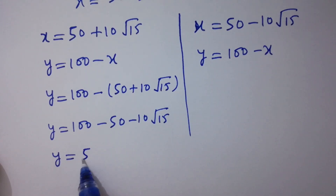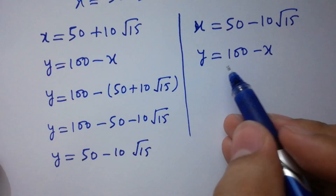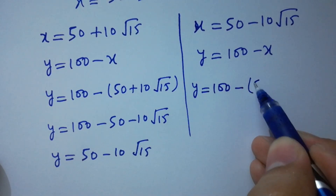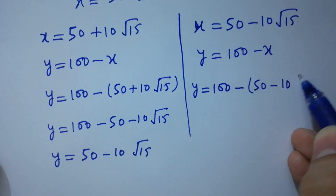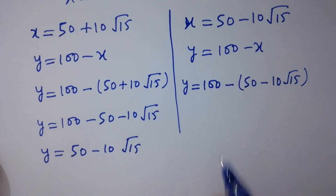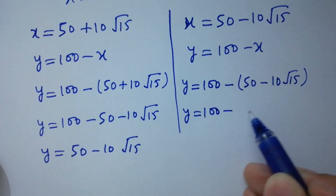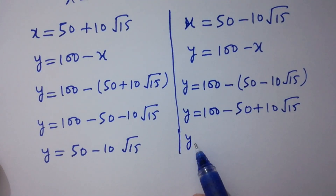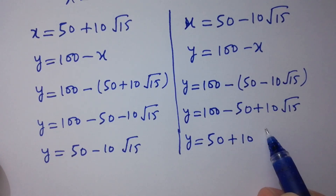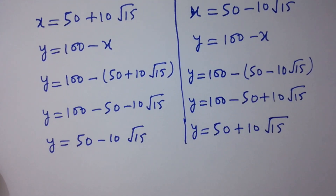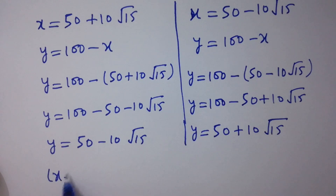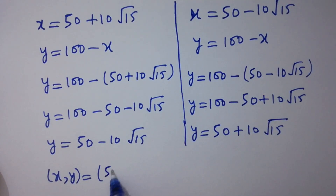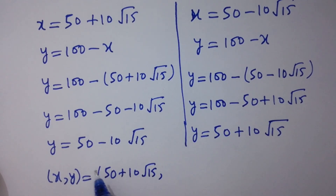And when x equals 50 minus 10 root 15, y equals 100 minus (50 minus 10 root 15), giving y equals 50 plus 10 root 15. So the values of x and y are: x equals 50 plus 10 root 15 and y equals 50 minus 10 root 15, or x equals 50 minus 10 root 15 and y equals 50 plus 10 root 15.